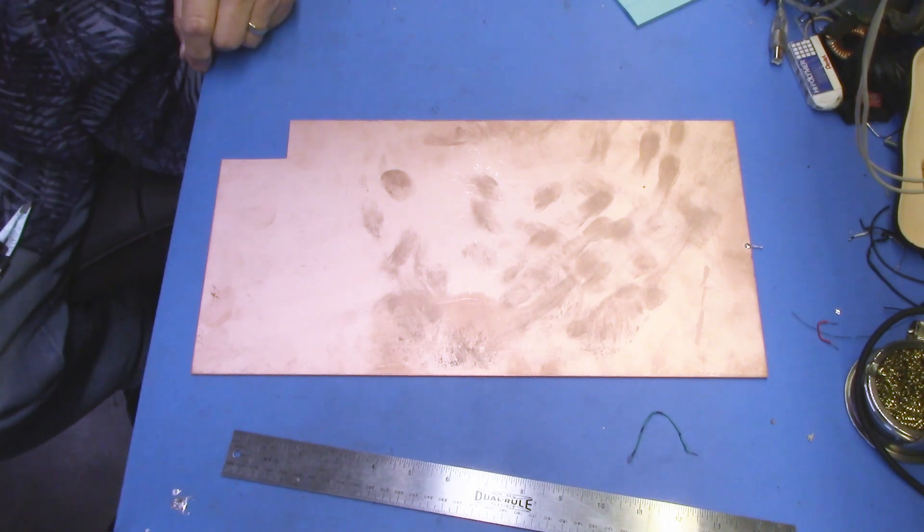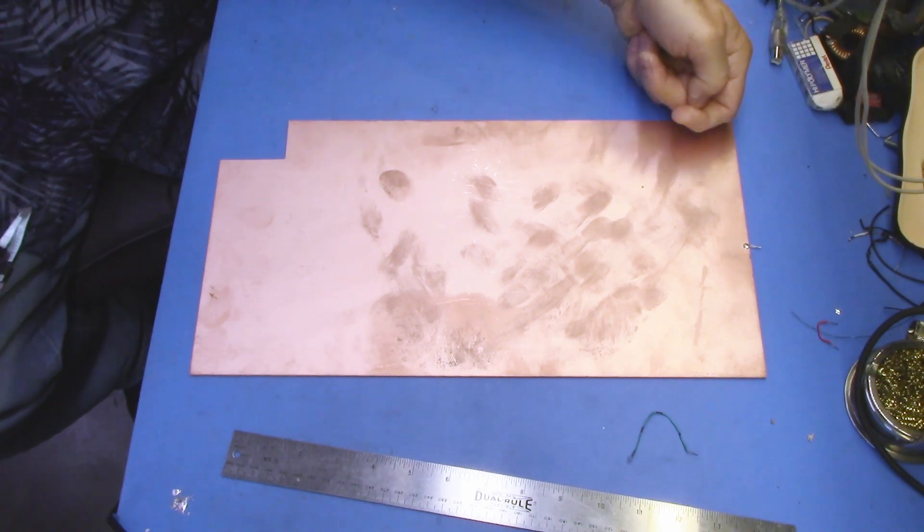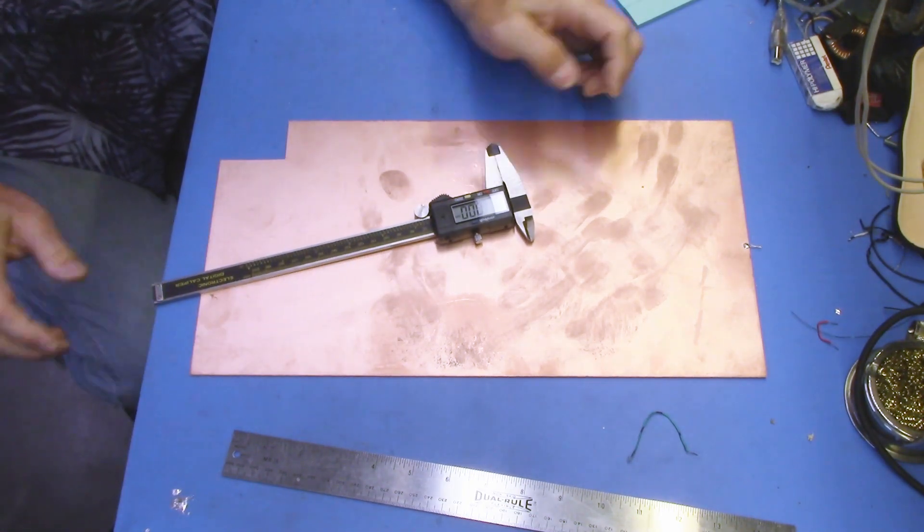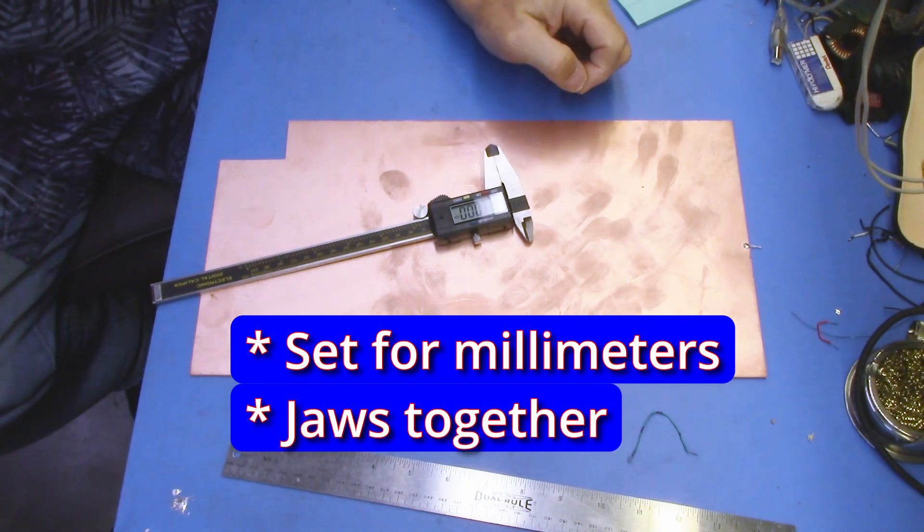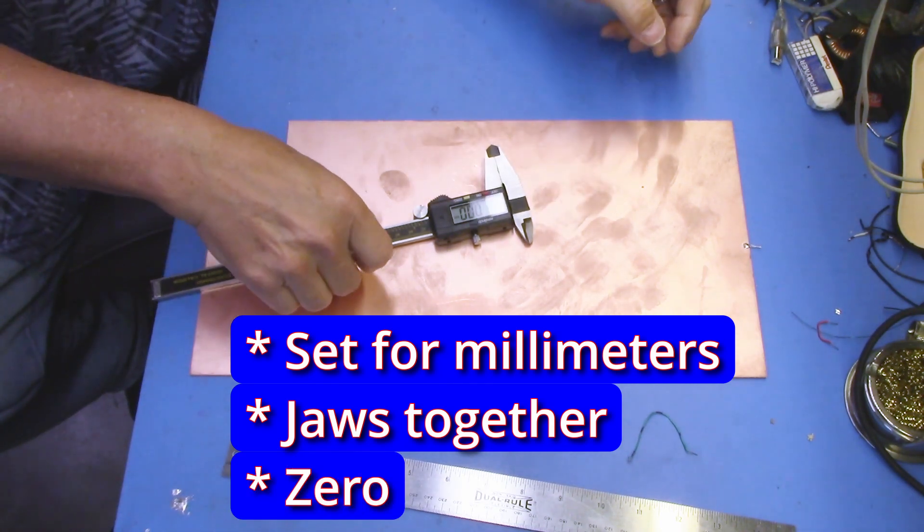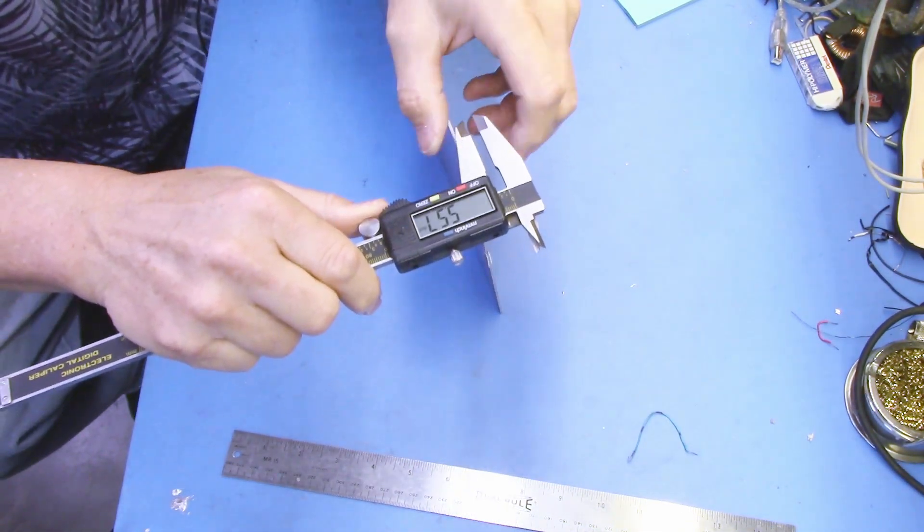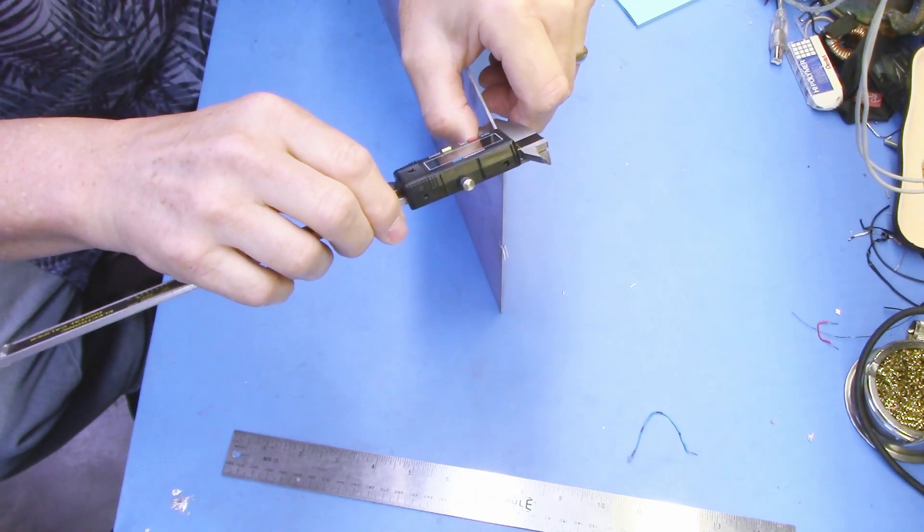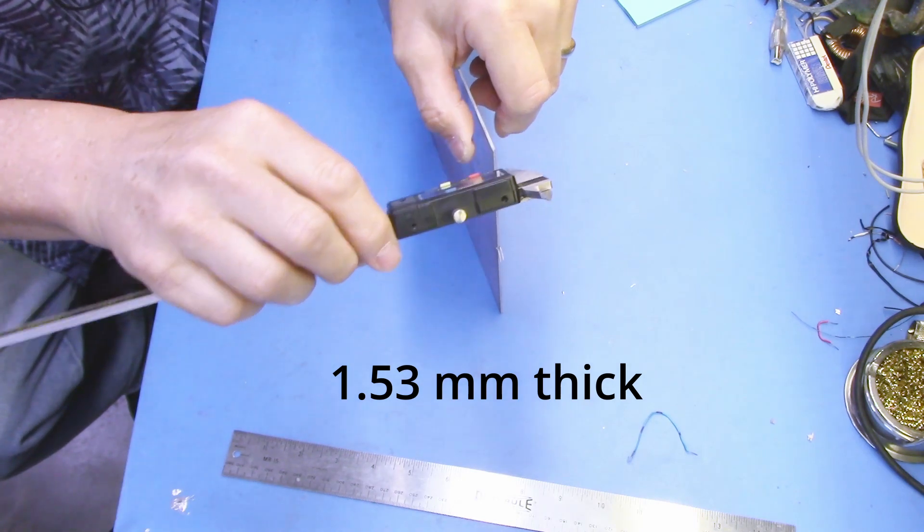So how thick is it? Now we can't measure the actual thickness of the substrate but we can measure the thickness of the overall PCB material. The copper, the substrate and the copper and then calculate the thickness of the substrate later. Now I'm going to use my electronic calipers here. I've set it up to measure millimeters. I've put the jaws very squarely together. I've zeroed it so it says 0.00 and now I'm going to measure my thickness of my PCB material.